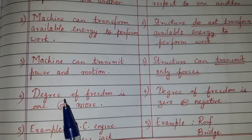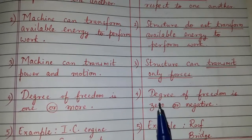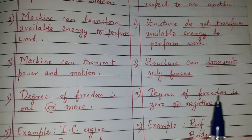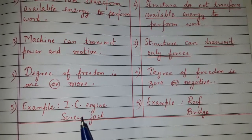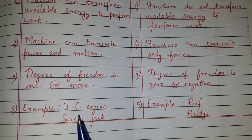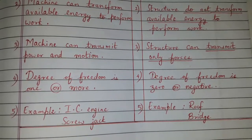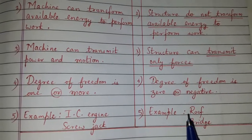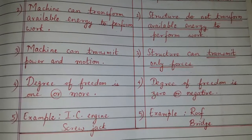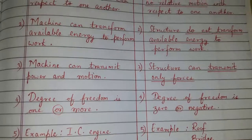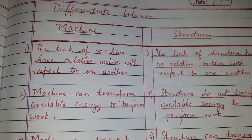The degree of freedom for a machine is one or more. The degree of freedom for a structure is zero or negative. Examples of a machine include an IC engine and a screw jack, whereas examples of a structure include a roof and bridges. This concludes the differentiation between machine and structure.